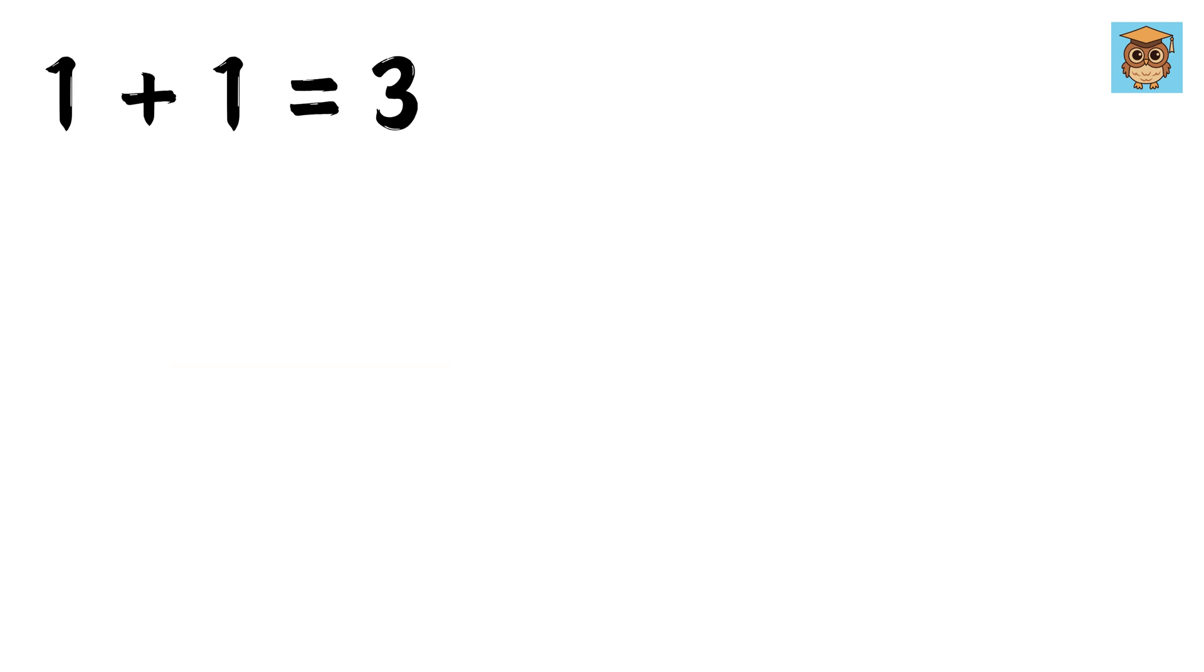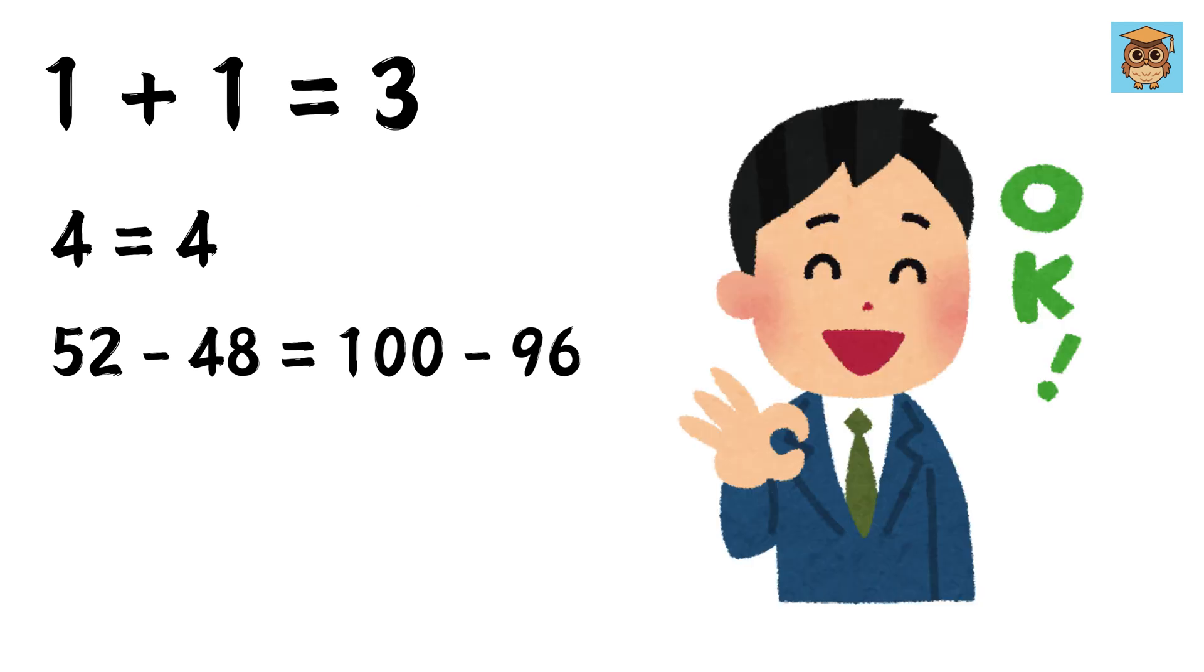We start with this setup, put 4 on the left-hand side and another 4 on the right-hand side. Now we can rewrite this 4 as 52 minus 48, and this 4 as 100 minus 96, right? There is no contradiction till now.